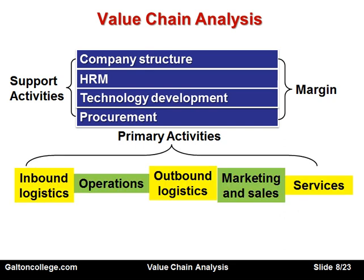The business also has primary activities. These could include areas like inbound logistics, operations, outbound logistics, marketing and sales, and services. These could be the primary activities.